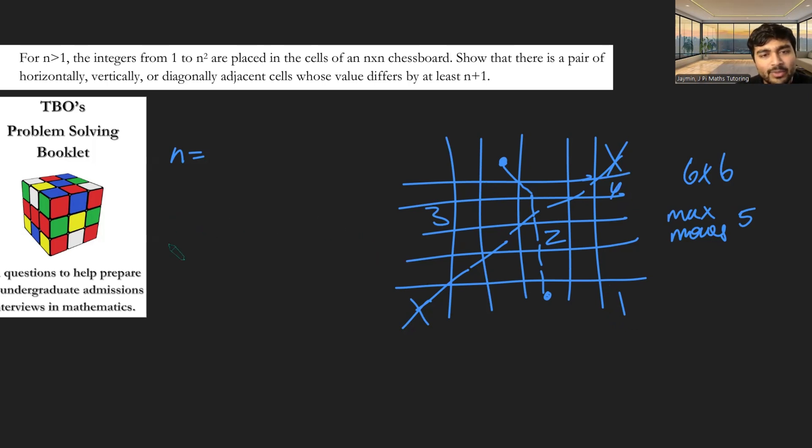Let's then consider where the square 1 is, and then wherever the square n squared is. Now, let's do this by contradiction. Let's assume that every single jump has value at most n.